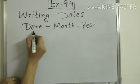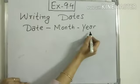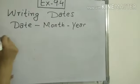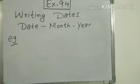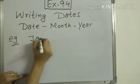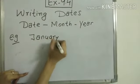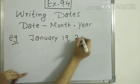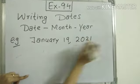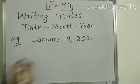For example, January 19, 2021. So how we will write? First date will come, 19 January 2021,